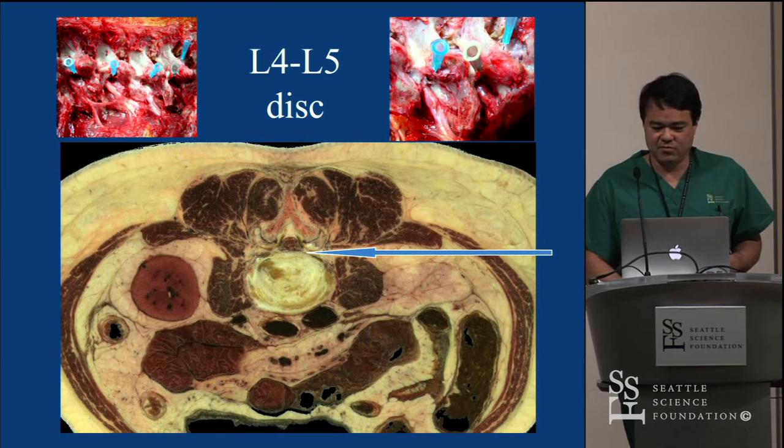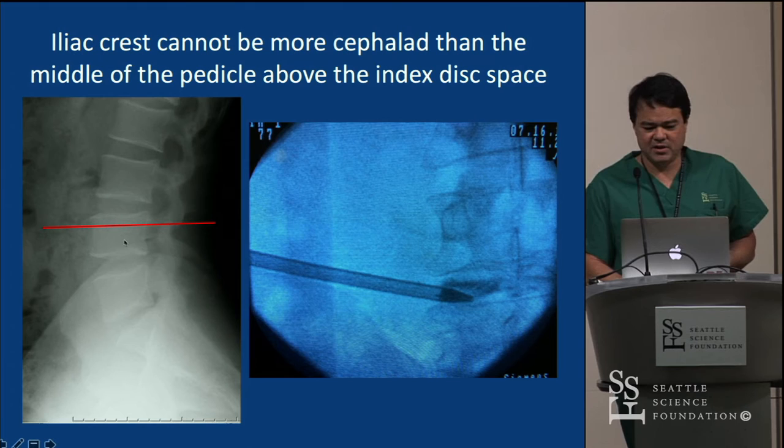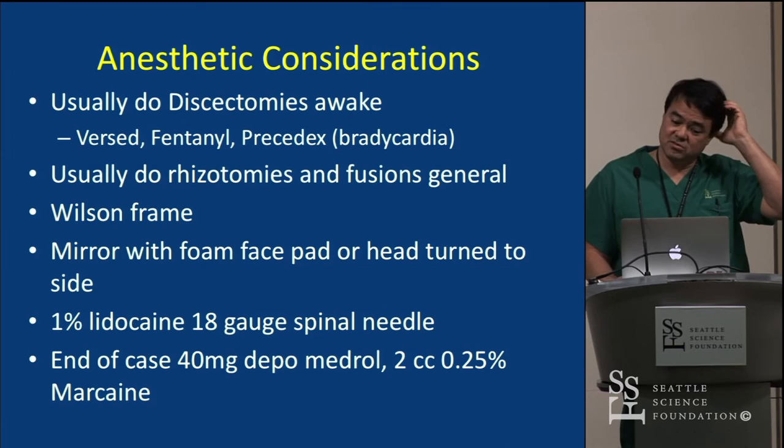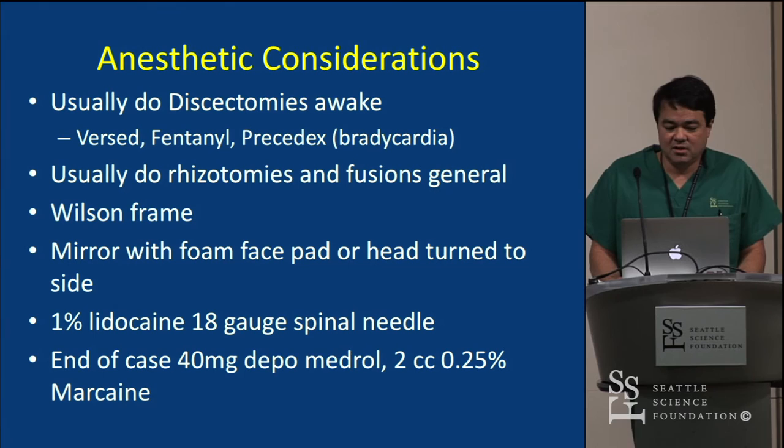Regarding needle placement: at L4-5, coming in too horizontal puts you in the retroperitoneal space; at L1-2, you'd be in the liver. Check your lateral X-ray — here's the top of your iliac crest and pedicle line. If the iliac crest is above that line, it's more challenging. For anesthetic considerations, I use Versed, Fentanyl, and Precedex. About 95% of my cases are awake, even some fusion cases. I use spinal cord monitoring when patients are asleep.